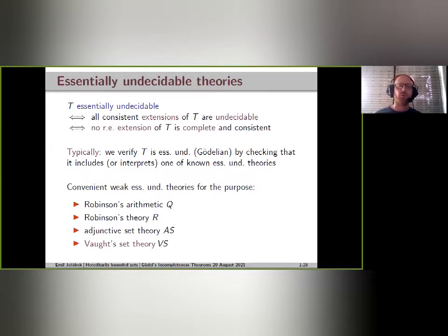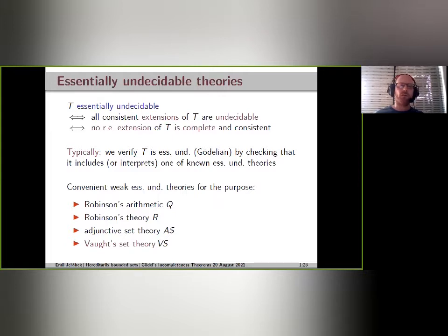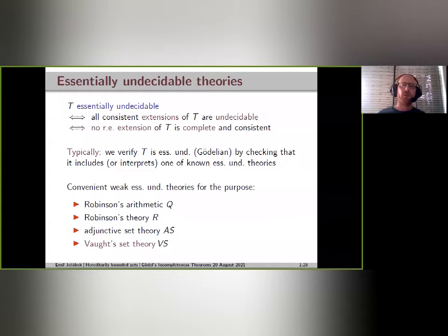This is basically the statement of the first Gödel incompleteness theorem: if a theory includes or interprets some minimal theory, then it is undecidable. So we need convenient, weak, and essentially undecidable theories for this to work — theories that on the one hand are weak enough to be included in whatever essentially undecidable theories we encounter in practice, and on the other hand are reasonably simple to define or to verify that they are included in another theory.